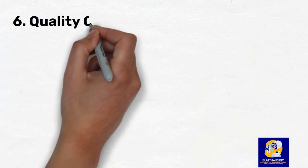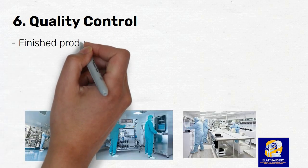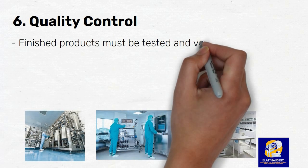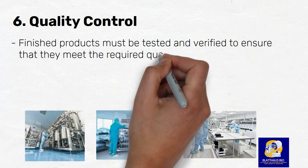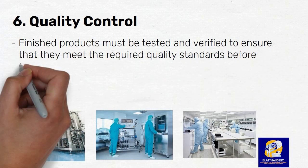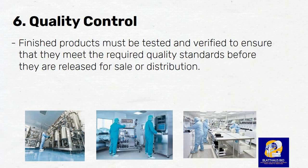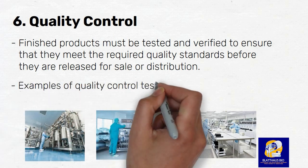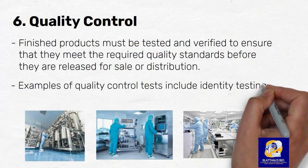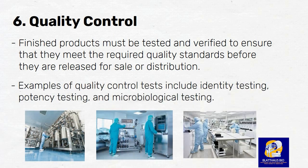Number 6: Quality Control. The sixth principle of GMP is the control of finished products. Finished products must be tested and verified to ensure that they meet the required quality standards before they are released for sale or distribution. Examples of quality control tests include identity testing, potency testing, and microbiological testing.